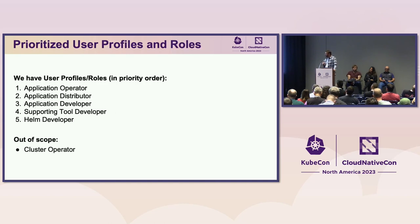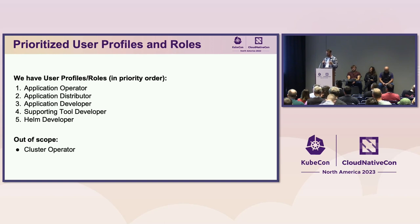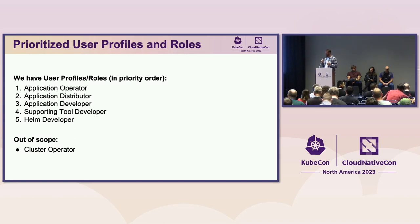Bringing that back to scope, when you're contributing to the Helm project and writing issues and requesting things, think about what a package manager should accept. Whenever you're working with the Helm project, try to keep that scope in mind. The other really important thing is the priority order of each user profile. For Helm, we are prioritizing the application operator, so PRs or issues about operator concerns are evaluated accordingly.